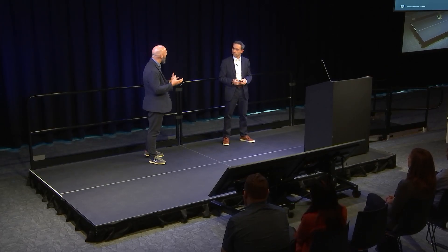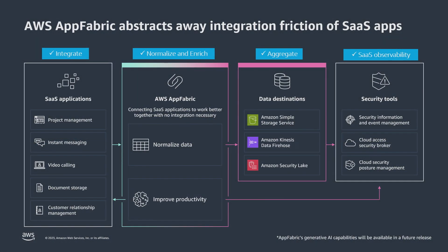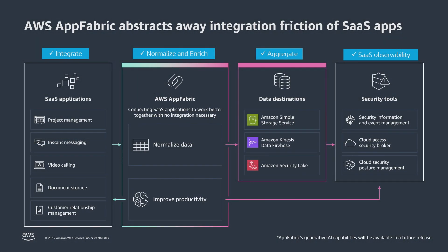Customers have told us that they would love for us to abstract this integration layer altogether. So AppFabric provides this layer of abstraction that is complementary to iPaaS — the two really co-live together and are very complementary. With AWS AppFabric, we're getting applications that were not designed together to actually work better together, not just exchange data with one another. And that's a key differentiator.